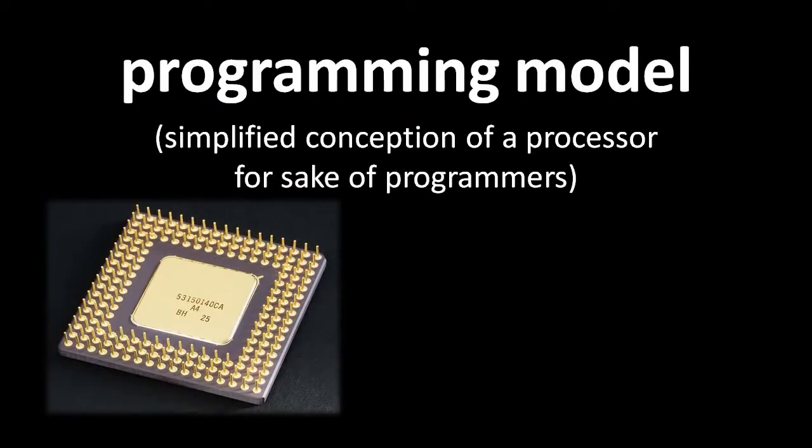If we wanted to fully understand how CPUs work, we would have to get into a lot about circuitry and electricity, as well as material science to understand how CPUs are manufactured. As programmers, though, we don't really need to know how CPUs work as long as we understand what they do. What programmers care about is the CPU's so-called programming model — the abstraction presented to programmers that elides over the messy details of circuitry and voltages.